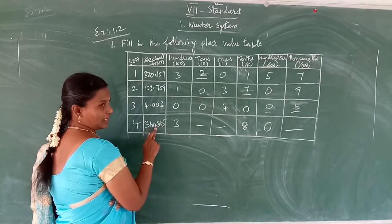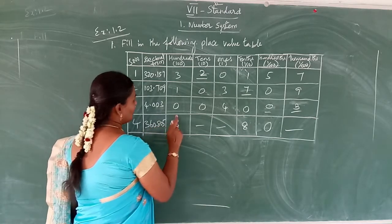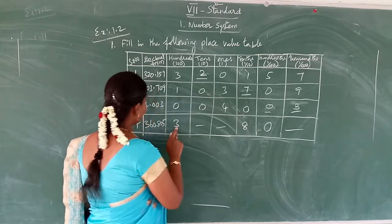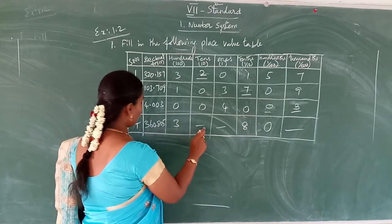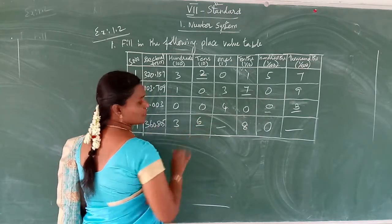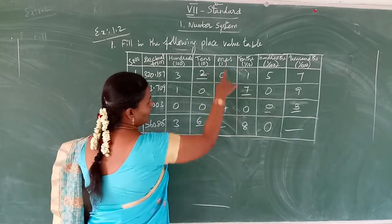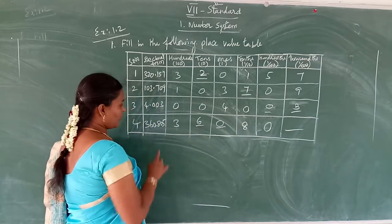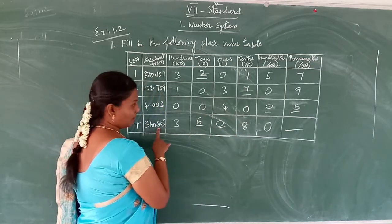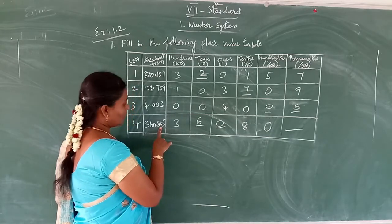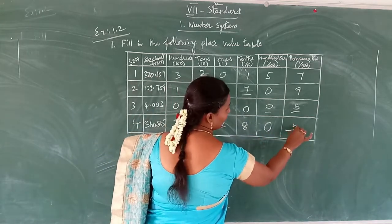333.805. So three is in the hundreds place, six is in the tens place — so in this column six comes. Then zero is in the ones place, eight is in the tenths place, zero is in the hundredths place, and five is in the thousandths place, so here we write five.